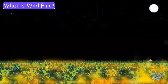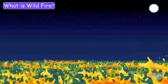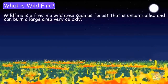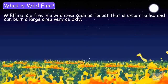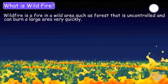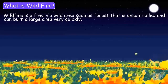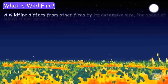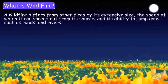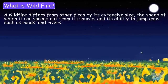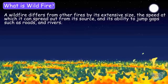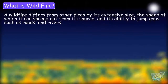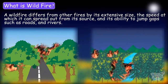First of all, what is a wildfire? A wildfire is a fire in the wild area, such as a forest, that is uncontrolled and can burn a large area very quickly. A wildfire differs from other fires by its extensive size, the speed at which it can spread out, and its ability to jump gaps, such as roads and rivers.